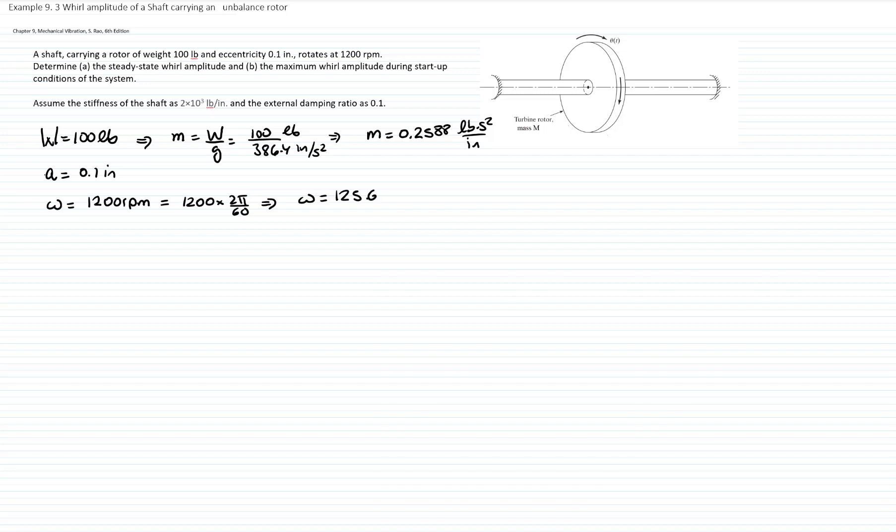The stiffness of the system is given by the deflection of the shaft, and the equivalent constant is given and is 2 times 10 to the third pounds per inch. And then we have a damping ratio of external damping, which is 0.1.